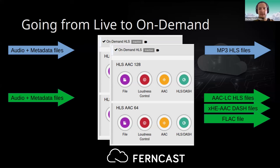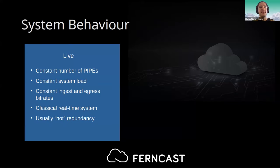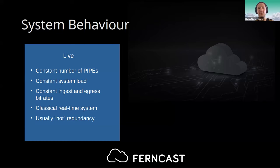The metadata file tells the system which pipe this audio file wants to be encoded with — or even multiple pipes. Maybe you want lossless files, XHE-AAC, and DASH segments for a concert. For the live systems, we usually have a constant number of pipes, which leads to constant system load and constant ingress and egress rates. It's a classical real-time system, which means there are fixed points in time where we have to process the buffers or we will lose listeners.